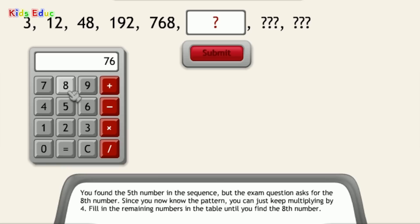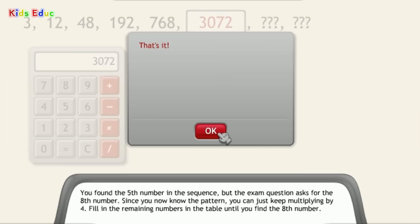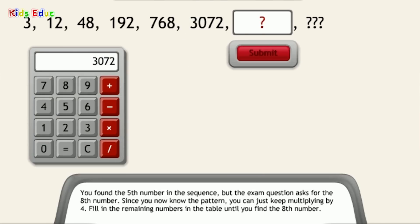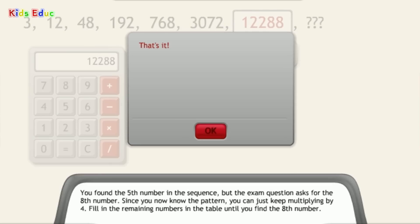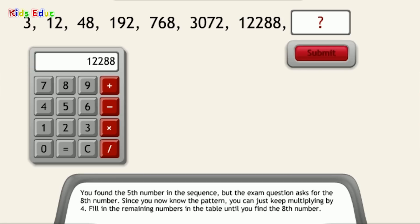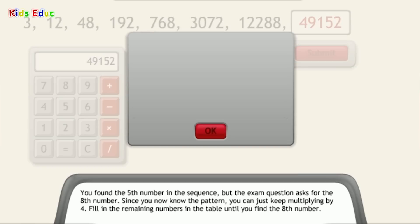That's right. 768 multiplied by 4 equals 3072. That's it. 3072 multiplied by 4 equals 12,288. That's it. 12,288 multiplied by 4 equals 49,152. That's it.